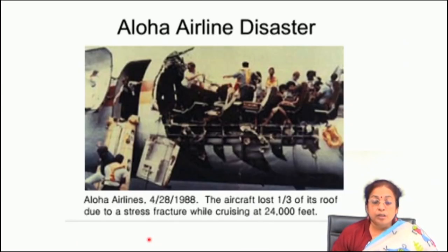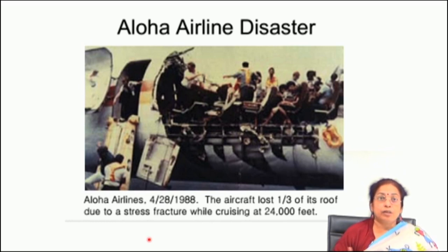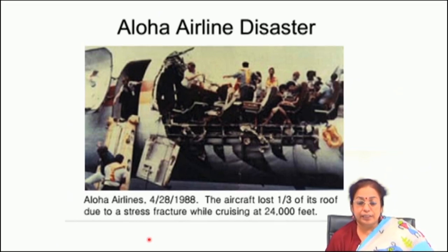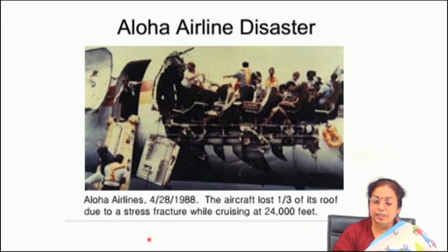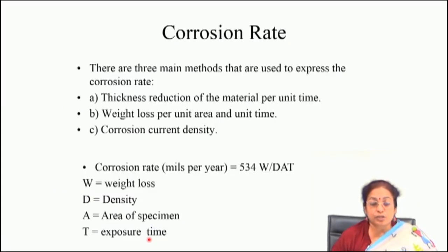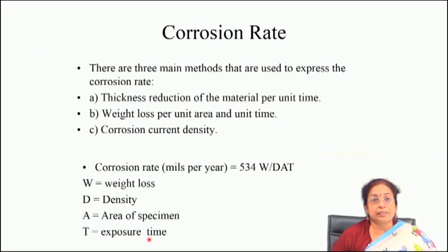Corrosion damage can be so severe that it causes devastation of entire structures — such as the case of fatigue corrosion which caused an airline structural failure. There was a typical accident in 1988 where an aircraft lost one third of its roof due to stress-corrosion while cruising at 24,000 feet. Corrosion can be quite dangerous, causing serious damage to components, and is especially severe in aerospace, automotive, and marine sectors. Our main objective must be to minimize corrosion to a large extent.